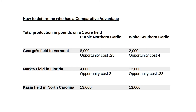And if you're taking it from Mark's perspective of northern purple garlic: other goes over — 12,000 goes over 4,000 — which gives you a three. So you have this opportunity cost calculation. And you can take it from Mark's Florida field: opportunity cost is 4,000 goes over 12,000, so you have an opportunity cost of 0.33.